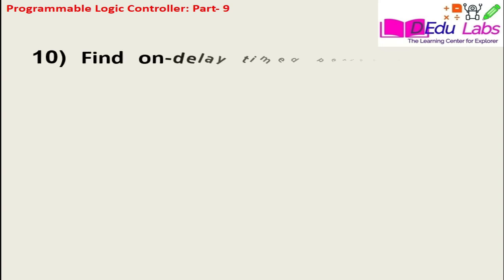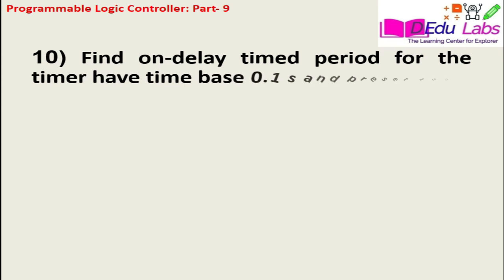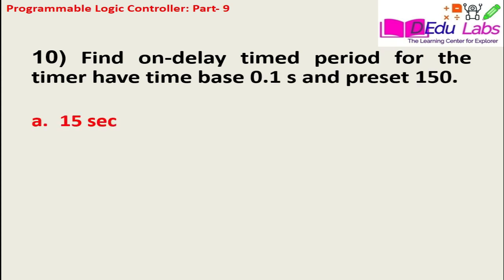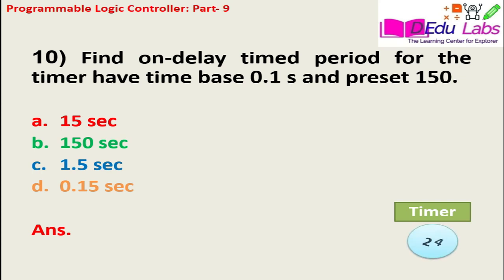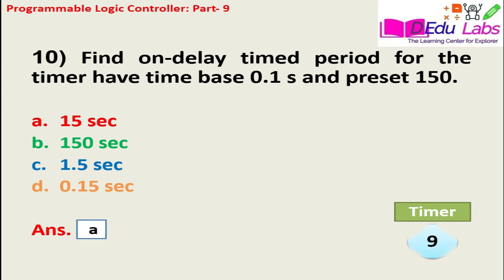Question number ten: find the on-delay time period for a timer with a time base of 0.1 second and preset value of 150. Option A: 15 seconds, option B: 150 seconds, option C: 1.5 seconds, option D: 0.15 seconds. The answer is option A — 15 seconds. Time delay equals time base multiplied by preset value: 0.1 × 150 = 15 seconds.